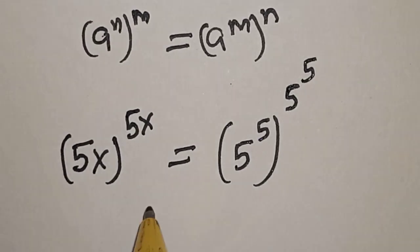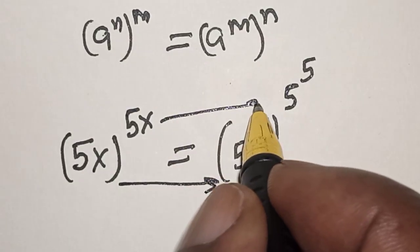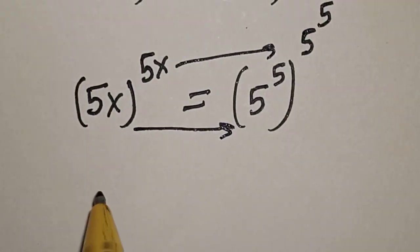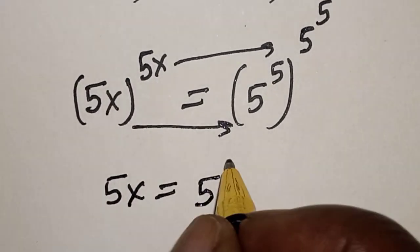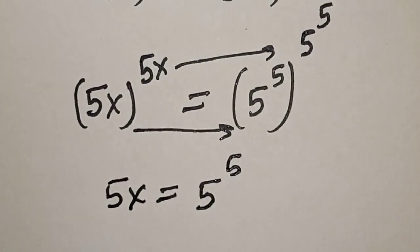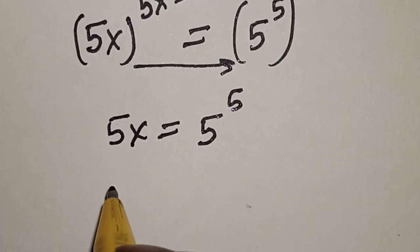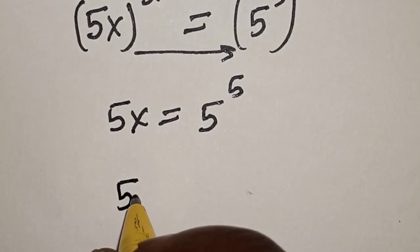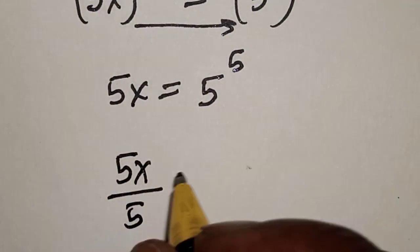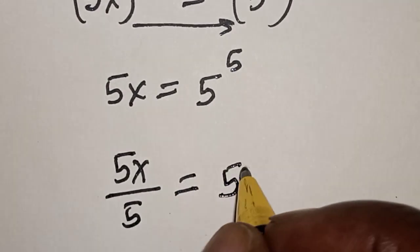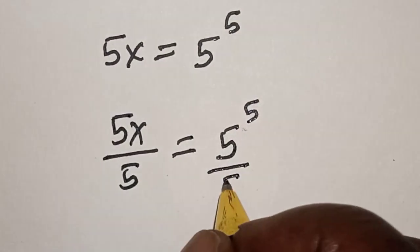Then, by comparing — if you look at this very well — this is equal to this, and this is equal to this. Therefore, 5x is equal to 5 raised to power 5, and this is equal to 5 raised to power 5 divided by 5.